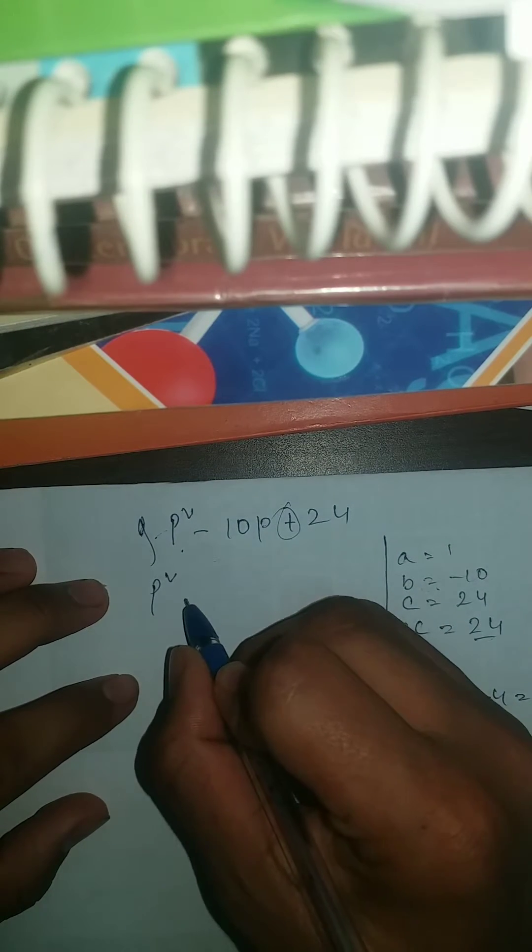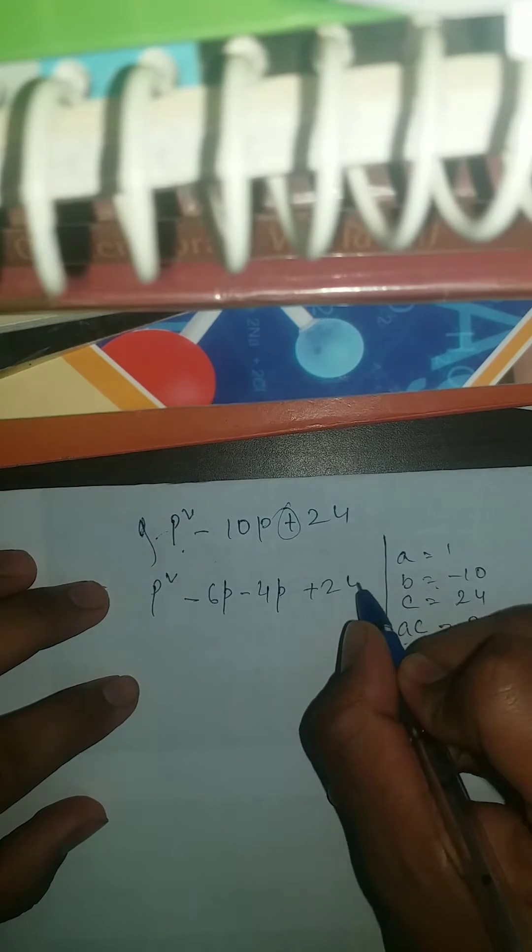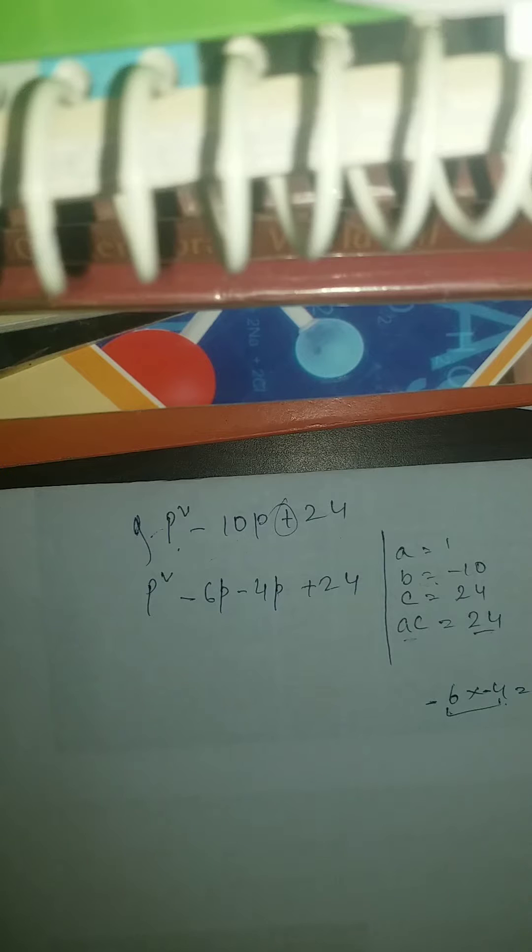So P square minus 6P minus 4P plus 24. Okay. Now here simply what you have to do, you have to take common. So how to take common,